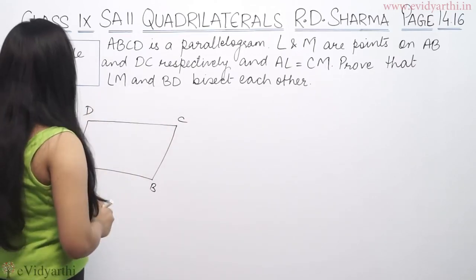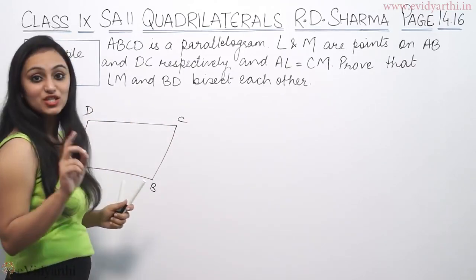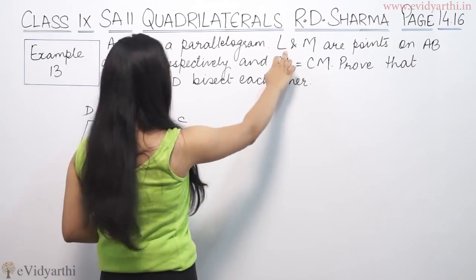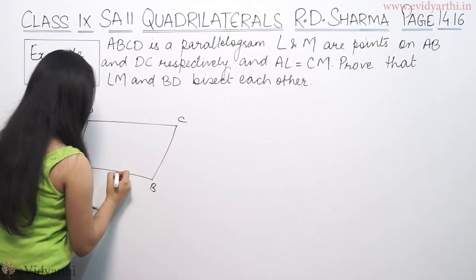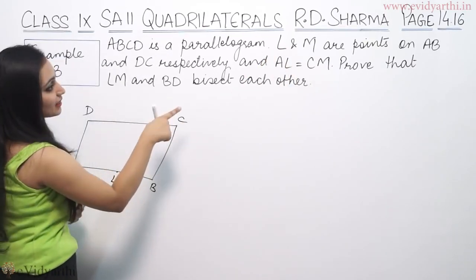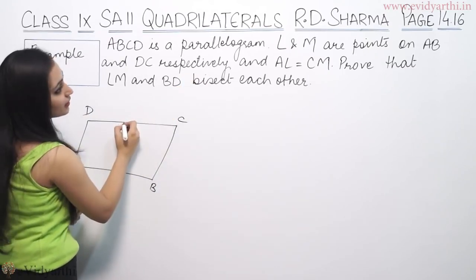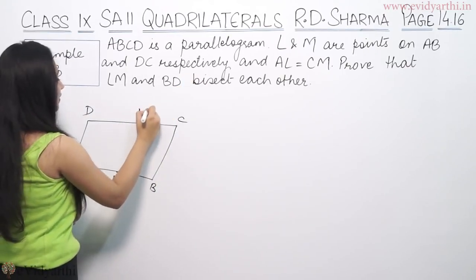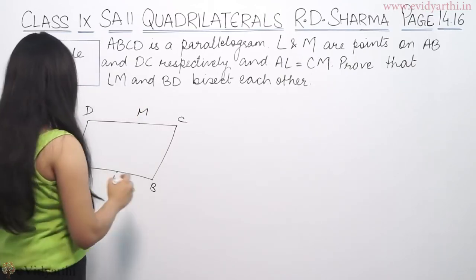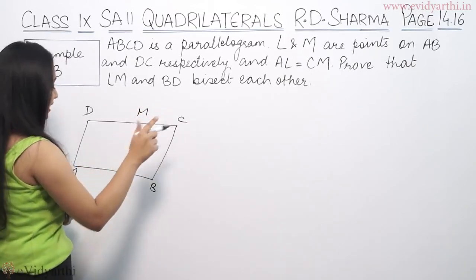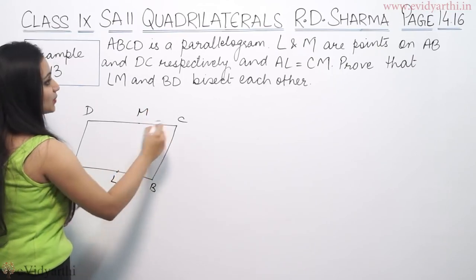And this says L and M are points on AB and BC respectively. L is a point on AB and M is a point on BC such that AL is equal to CM.